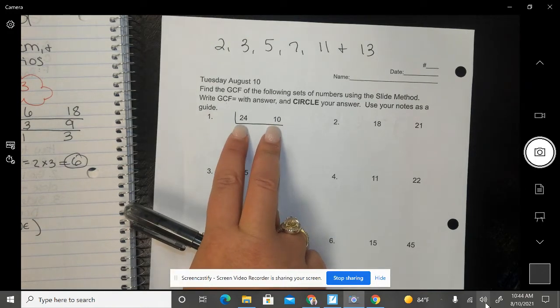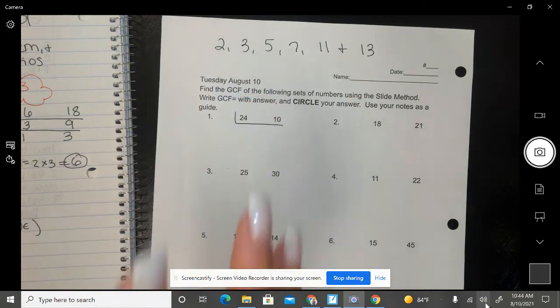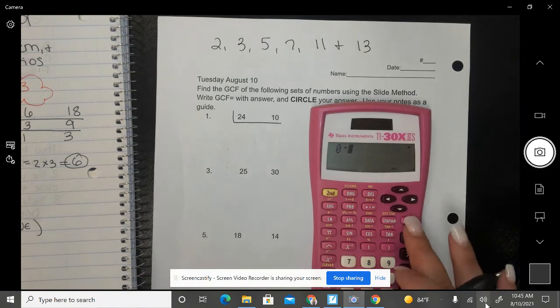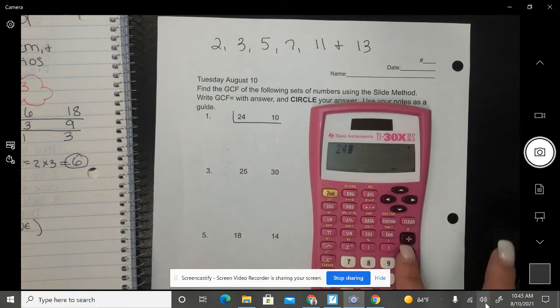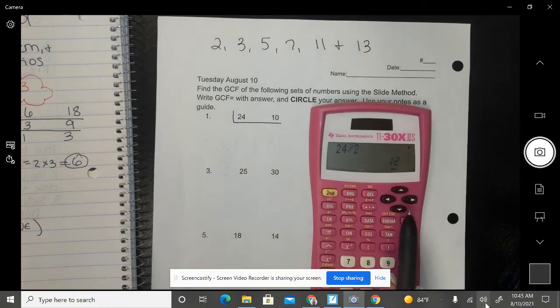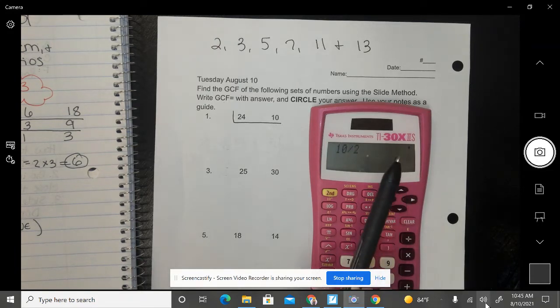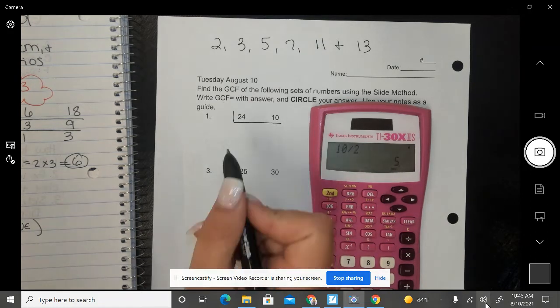I know that both of these numbers are even so I can start with 2. If I do not know if 2 will work I can take my calculator, figure it out, and do 24 divided by 2 and I get 12, a whole number. And then I want to make sure 10 can be divided by 2 as well and I get a whole number. So that's going to work.